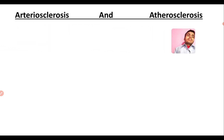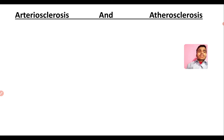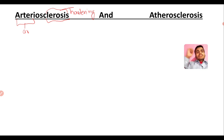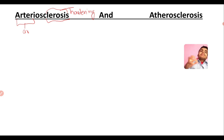Now, arteriosclerosis versus atherosclerosis — this is a common query many friends have asked on Facebook posts and comments. 'Arterio' relates to artery, and 'sclerosis' means hardening. So arteriosclerosis simply means hardening of the arteries. This hardening is basically seen at the tissue level and is associated with senile arteriosclerosis — related to aging.